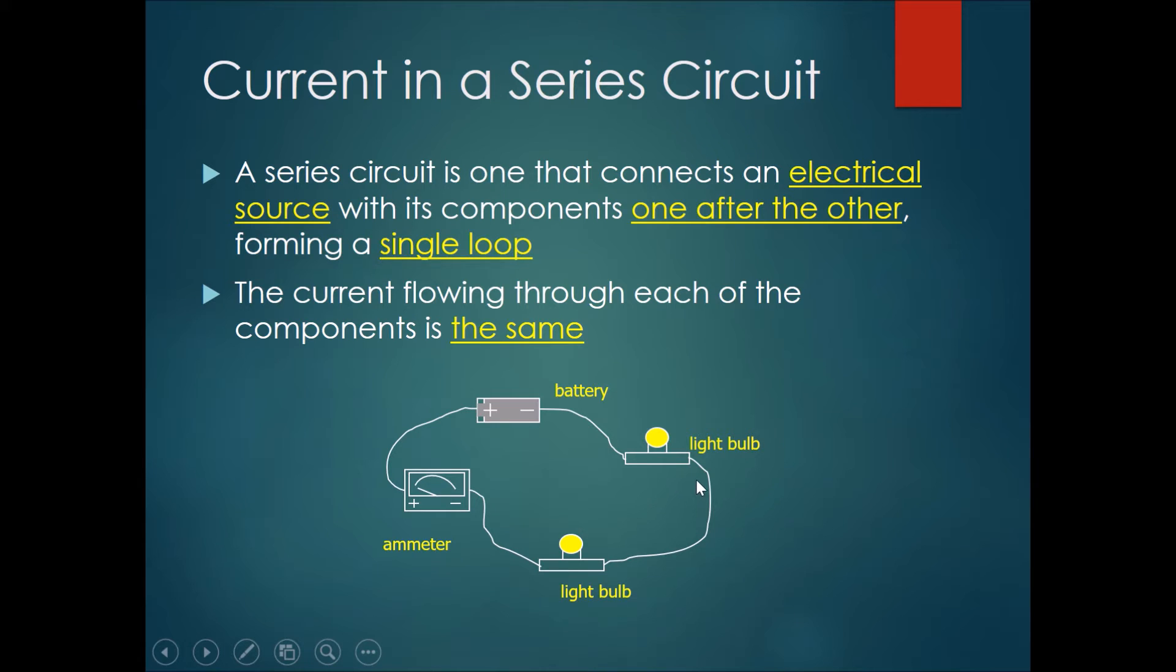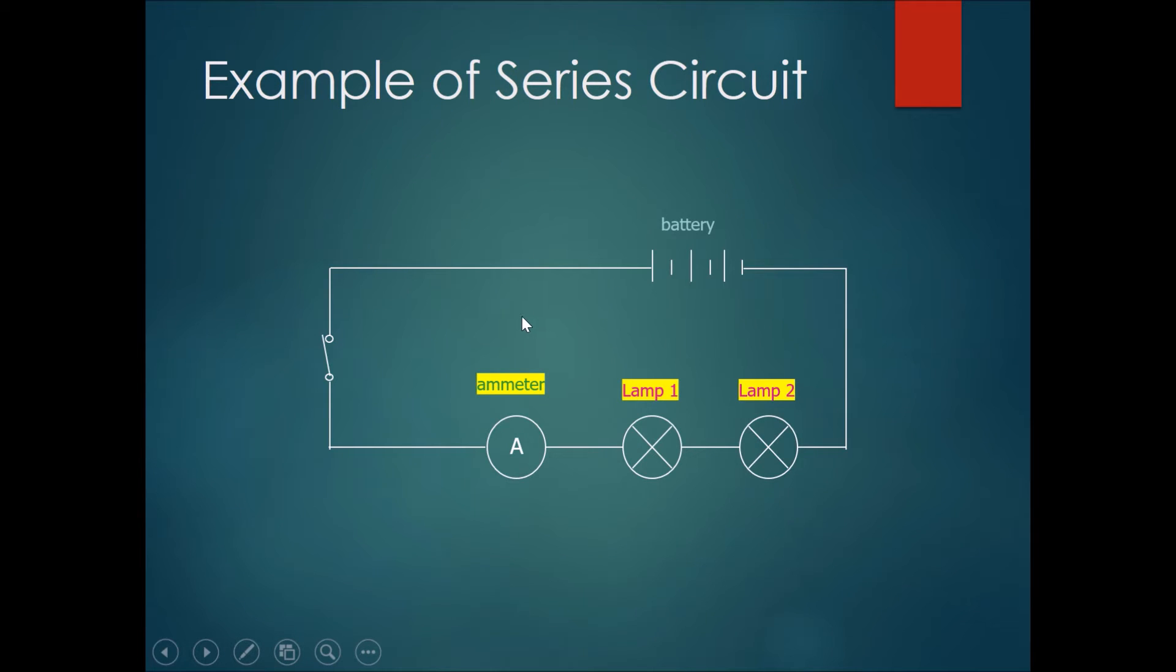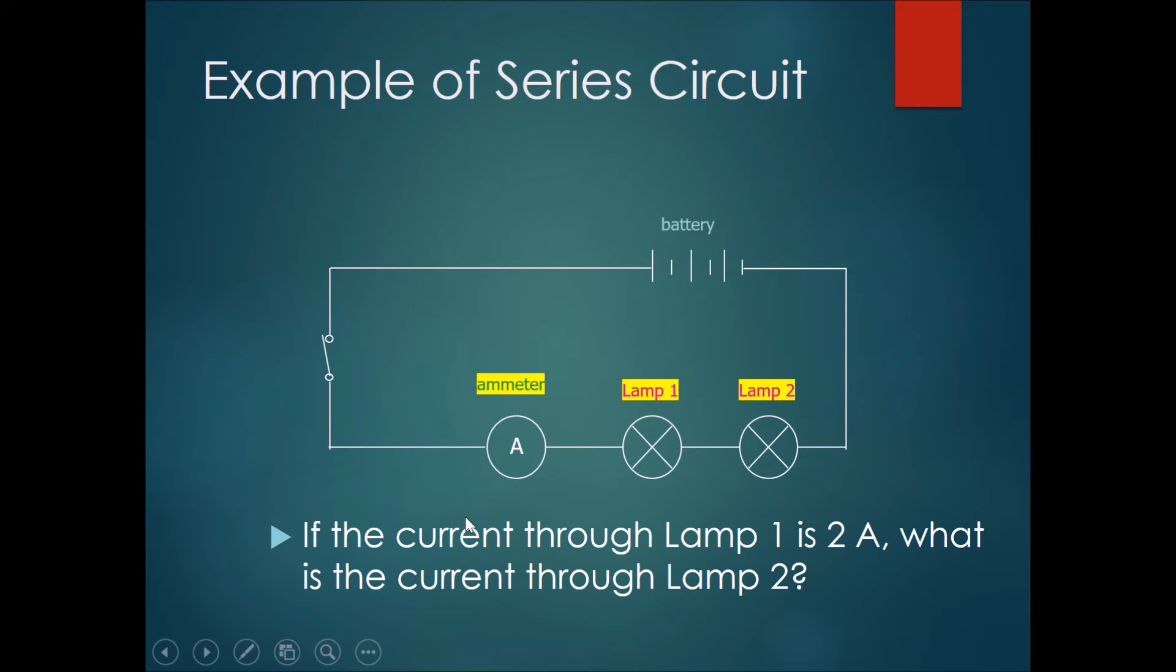So over here is an example of a series circuit. One question is this: if the current through lamp one is two amperes, what would be the current through lamp two? The correct answer would be also two amperes because if it's a series circuit, every point along the line would be the same current.